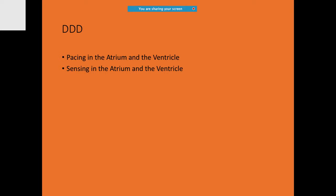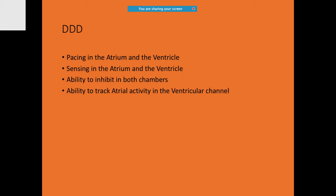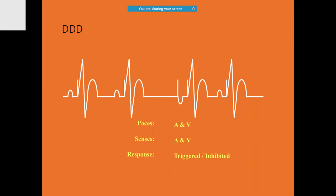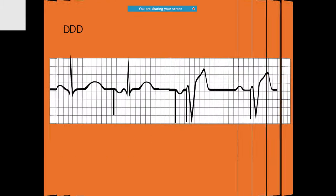DDD is the master of all — it paces in both chambers, senses in both, has both inhibitory and triggered responses, and has tracking ability. In the first two beats it sensed the atrial beat and gave a triggered response for the ventricle. In the third beat, when no atrial activity was sensed, it paced both atrium and ventricle. In the last beat, an intrinsic P wave was present so it paced only the ventricle.